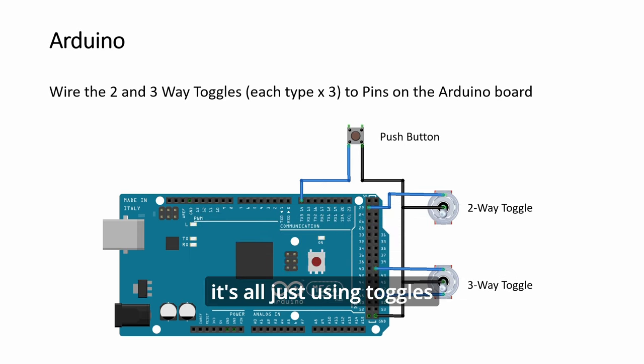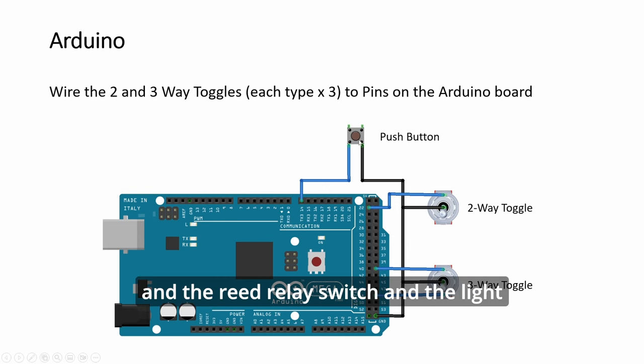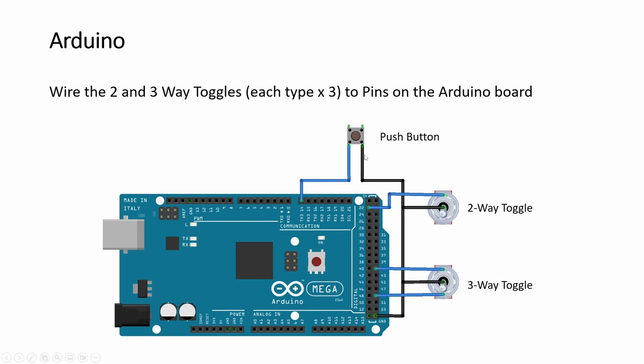Okay, for the Arduino setup, the oxygen panel and this engine panel, it's all just using toggles and the reed relay switch and the light indicators are both like push buttons just plus minus. Alright, so this is a very simple setup.